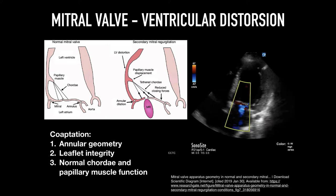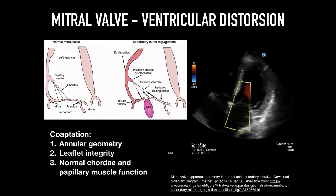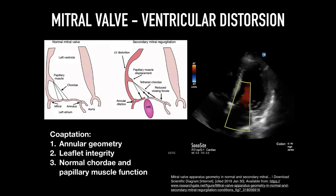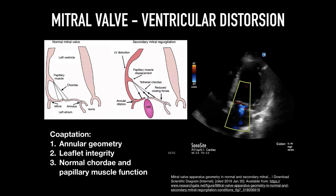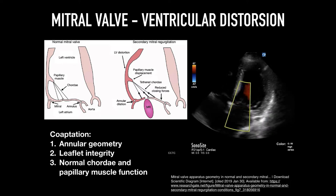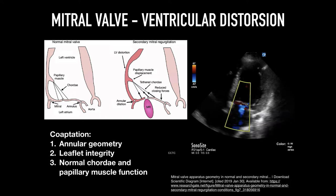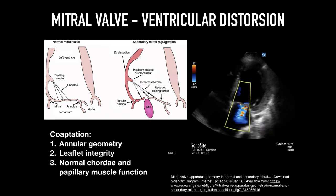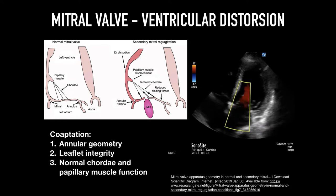Leaflet integrity is an unusual problem — having holes in your valve — but is typically found in pathologies such as endocarditis. Three is the apparatus formed by the chordae, papillary muscles, and wall motion and their effect on those features. This is typically affected by a combination of ventricular dilatation and wall motion abnormalities.